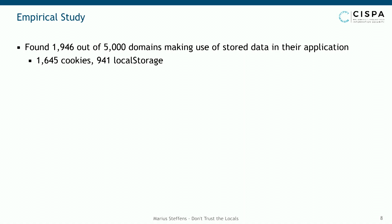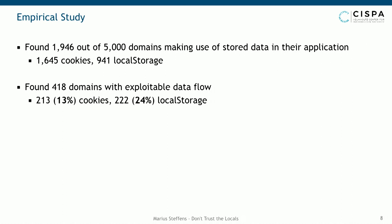1,600 of these take data from cookies and use it within their application, and 940 do so with local storage. The interesting thing is that we found 418 domains which are actually exploitable by such a flow — meaning an attacker can exploit a flow from persistence into code execution — with 213 domains having such a flow originating from cookies and 222 from local storage.